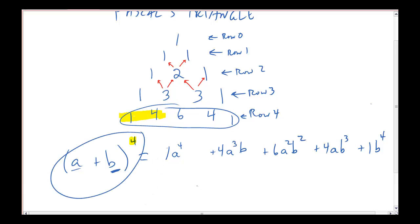So a plus b to the fourth equals 1a to the fourth, plus 4a cubed b, plus 6a squared b squared, plus 4ab cubed, plus 1b to the fourth. If you ever get confused on what powers to use, notice all the exponents add up to 4: 3 and 1 is 4, 2 and 2 is 4, 1 and 3 is 4. If I start at the left and go down the powers of a, and start at the right and go down the powers of b, the powers always add up to that number. And that's going to work no matter what a and b are.